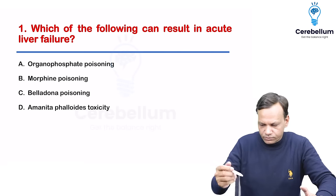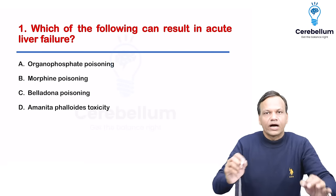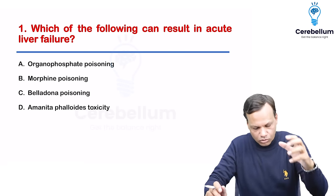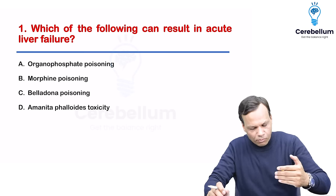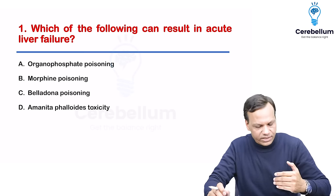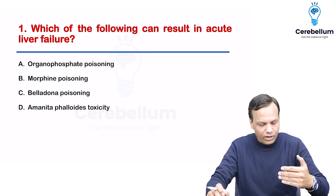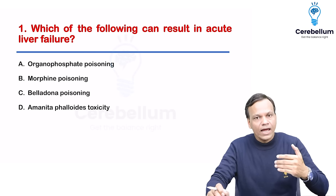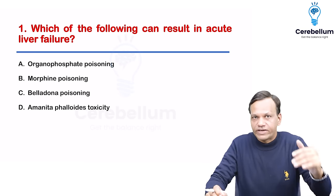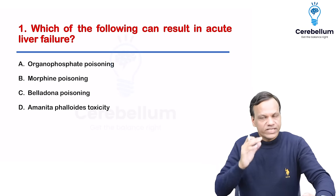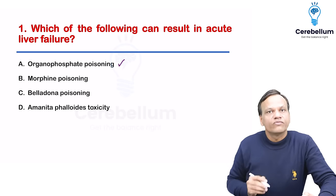Starting with the first question: which of the following can result in acute liver failure? The options given are mostly poisoning — organophosphate poisoning, morphine poisoning, belladonna poisoning, and Amanita poisoning, which can cause liver failure. We will see them one by one.